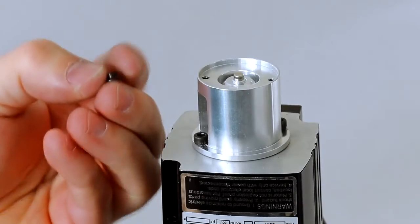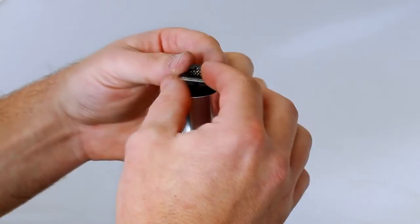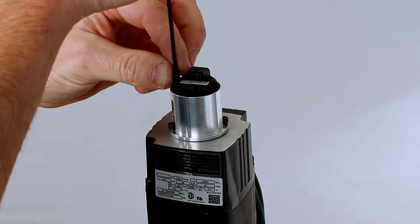Next, place the centering and gapping tool over the magnet. Install the encoder module with the supplied screws. Ensure the magnet holder is tight against the encoder module.